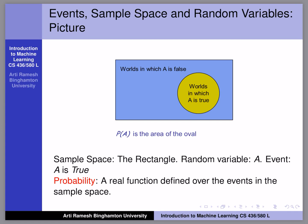Probability is defined as a function over the events in the sample space. Here we have events 'A is true' and 'A is false,' and over these two events we can have a function which determines how probable these events are. That function is what is called probability.